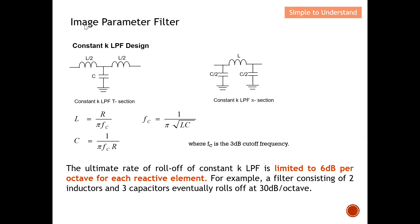For this video, I'm going to show how to design a low-pass filter using the image parameter method. This is what we call a constant K low-pass filter with a T-shape. Because the circuit looks like the letter T, this is called a T-section constant K low-pass filter, and this is the design I'm going to illustrate.